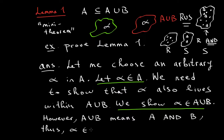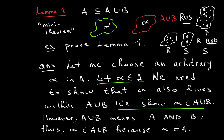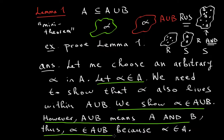Thus, alpha is an element of A union B because alpha is an element of A. The underlined lines are all you really need to write — everything else is extra explanation so you understand what was done.